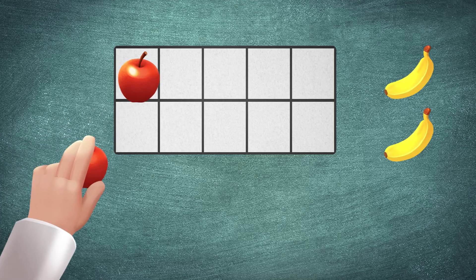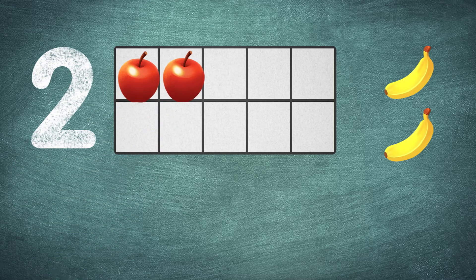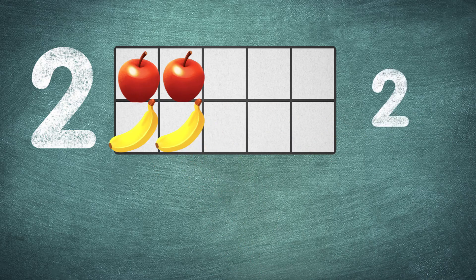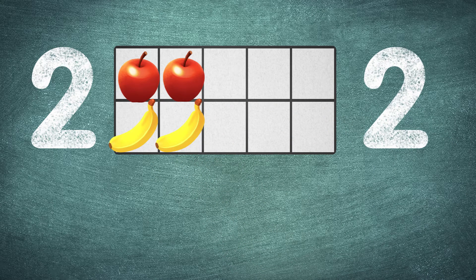One, two. Two apples. There are two apples. One, two. Two bananas. There are two bananas.